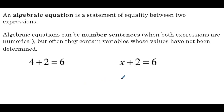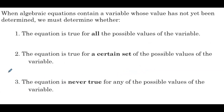Our goal in solving is figuring out what value of the variable makes the equation true. When we do that, there are three different choices that we can get. When algebraic equations contain a variable whose value has not yet been determined, we must determine whether the equation is true for all possible values of the variable, true for a certain set of possible values, or never true for any possible values.